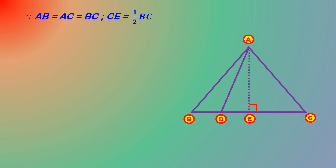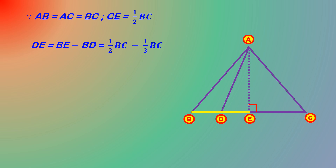Since AB is equal to AC is equal to BC — in an equilateral triangle all sides are equal — so CE is equal to half BC. DE is equal to BE minus BD.